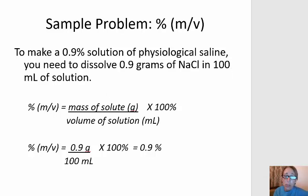So then 0.9 grams divided by 100 mils multiplied by 100% gives us the 0.9%.